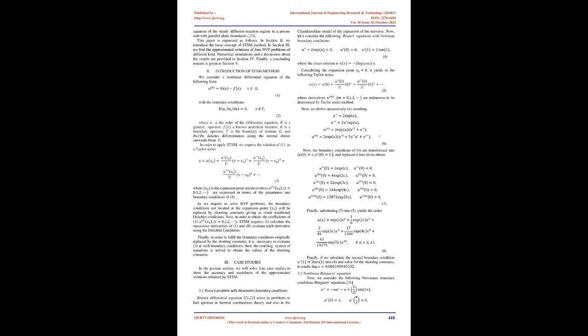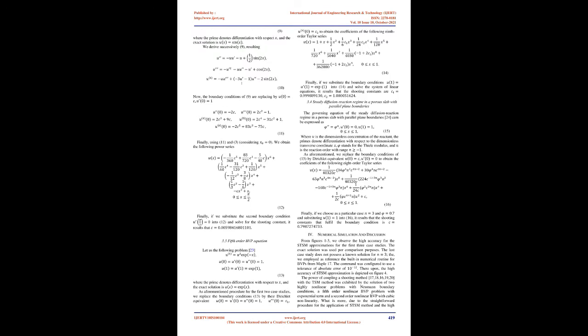Step 2: we apply the TSM method to obtain the coefficients of the series solution using derivatives. The derivatives are obtained from the nonlinear differential equation. Step 3: the approximate solution is obtained by substituting the calculated coefficients from the last step into the Taylor series expression. Step 4: finally, the values of the shooting constants are obtained by evaluating the approximate solutions at the boundary conditions and solving the resulting system of equations.